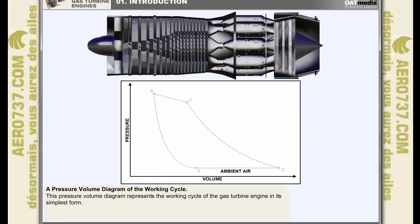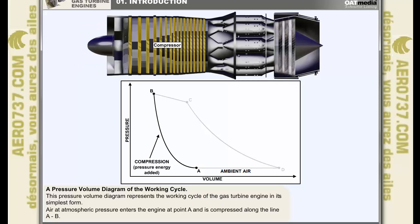The pressure-volume diagram shown here, otherwise known as the Brayton cycle, represents the working cycle of the gas turbine engine in its simplest form. Air, at atmospheric pressure, enters the engine at point A and is compressed along the line AB.